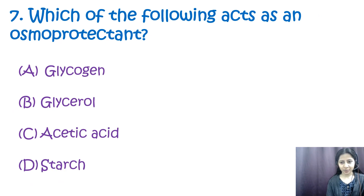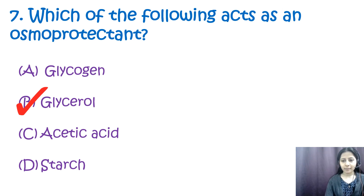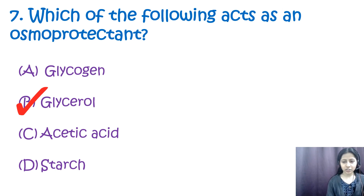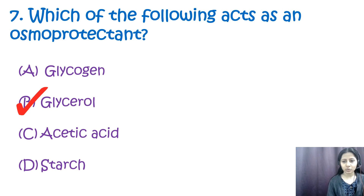Question number seven: which among the following acts as an osmoprotectant? Options are: a) glycogens, b) glycerol, c) acetic acids, d) starches. The correct option is glycerol. Osmoprotectants are small organic molecules that help organisms survive extreme osmotic stress by balancing osmotic differences between the cell and environment. Glycogens are polysaccharides of glucose units; acetic acids are carboxylic acids produced by oxidation of ethanol; starches are polysaccharides containing amylose and amylopectin.